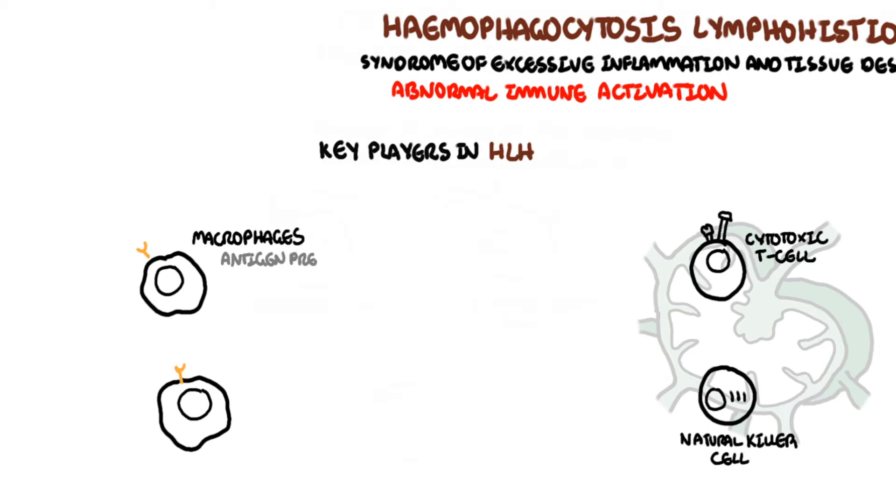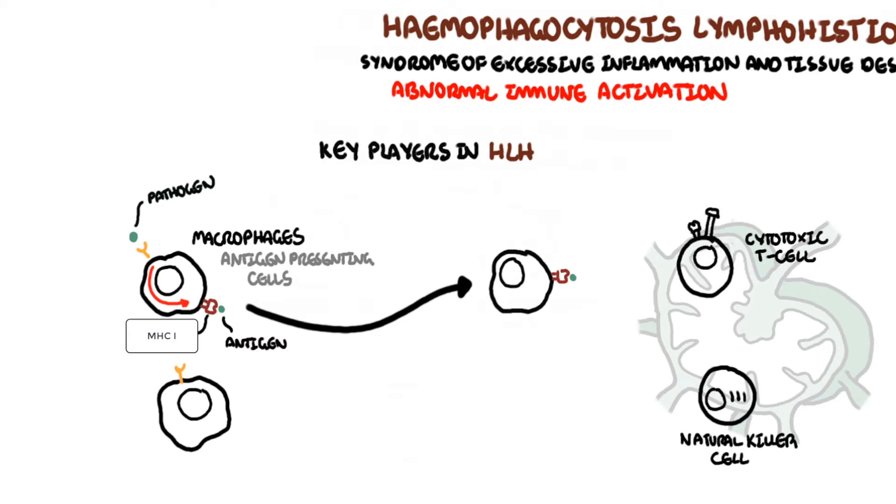Macrophages are professional antigen-presenting cells derived from circulating monocytes. Macrophages are phagocytes. They engulf, process, and normally present foreign antigens to the lymphocytes to initiate a specific immune response towards that antigen.